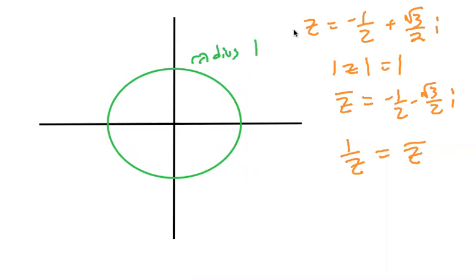So what's going on here is that the modulus of z is equal to one. These are points on the unit circle minus one half plus square root three over two i. So that is going to be z right there.